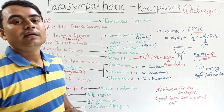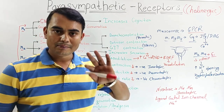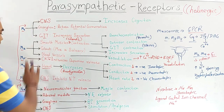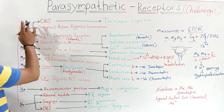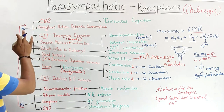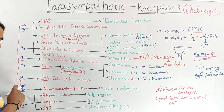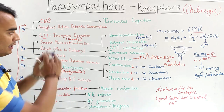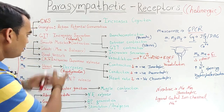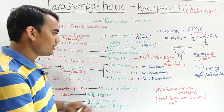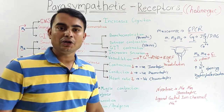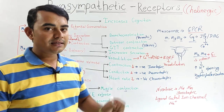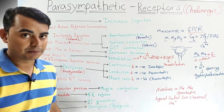So these are the cholinergic receptors — muscarinic and nicotinic. Muscarinic receptors are 5 types: M1, M2, M3, M4, and M5, while nicotinic receptors are 2 types: NN and NM. Their different locations, actions, and effects on each organ are summarized here — very important for your exam preparation.